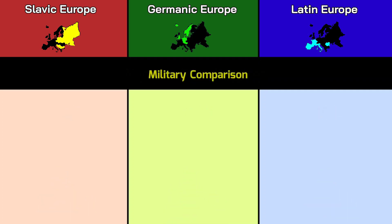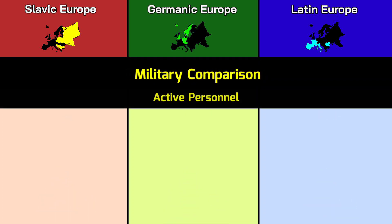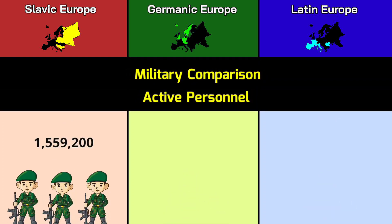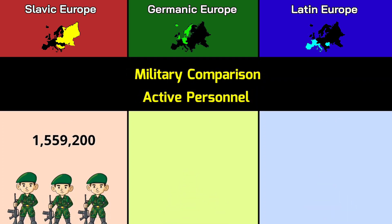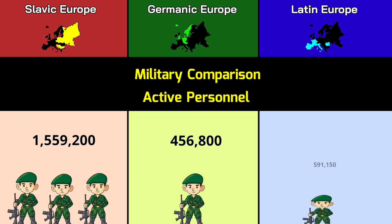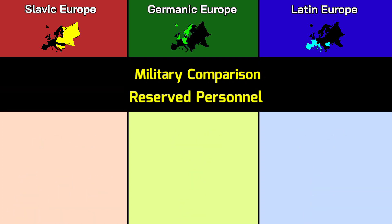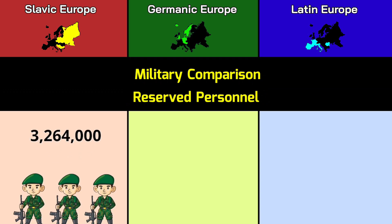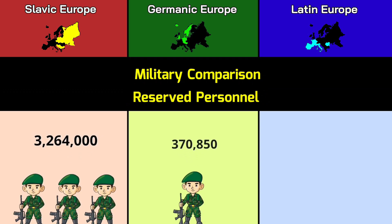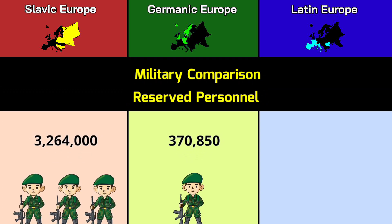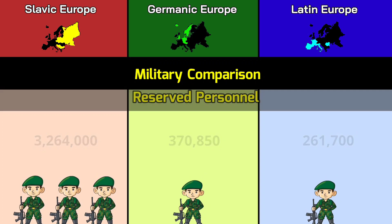Number of billionaires: 141, 250, more than 100. Military comparison — active personnel: 1.56 million, 456,800, 591,150. Reserve personnel: 3.26 million, 370,850, 261,700.